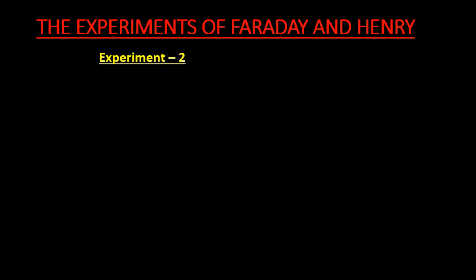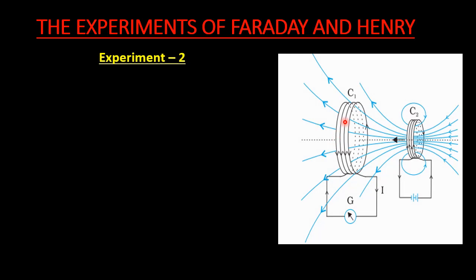Now let us discuss the second experiment of Faraday and Henry. In this experiment, two coils were taken: coil C1 connected to the galvanometer, and coil C2 connected to a battery. The galvanometer detects any current developed in coil C1, and the battery drives current through coil C2. As we know, current flowing through a conductor produces a magnetic field, so coil C2 produces a magnetic field. In experiment one, a bar magnet was used; here in experiment two, a coil connected to a battery acts the same way — both produce a magnetic field.